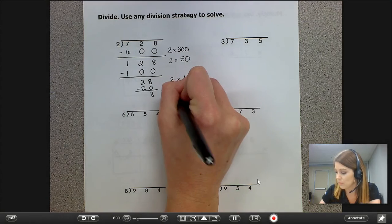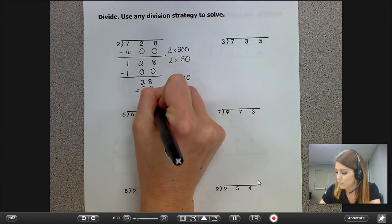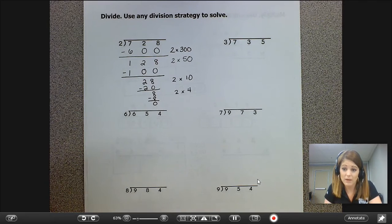Well, I know two groups of 4 equals 8. Subtract, nothing remaining, so I don't have a remainder, just like I predicted.